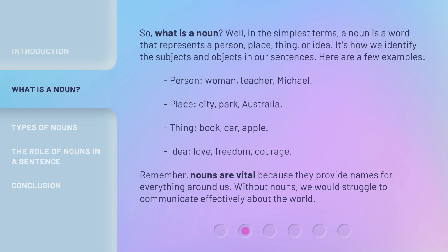Person: woman, teacher, Michael. Place: city, park, Australia. Thing: book, car, apple. Idea: love, freedom, courage. Remember, nouns are vital because they provide names for everything around us. Without nouns, we would struggle to communicate effectively about the world.